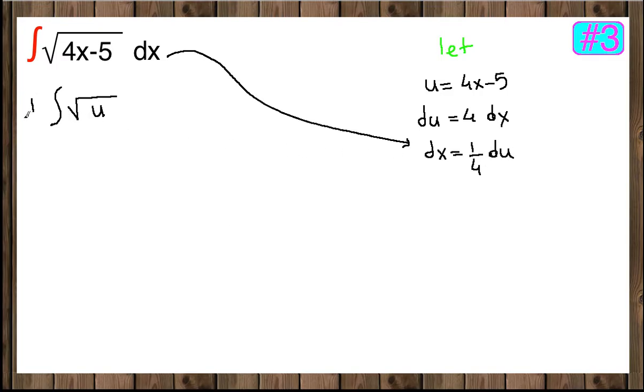We can pull 1 fourth to the front and leave the u here. Let's rewrite square root of u in the power form. So square root of u is u to the 1 half. Now we know how to take anti-derivative of u to the 1 half.